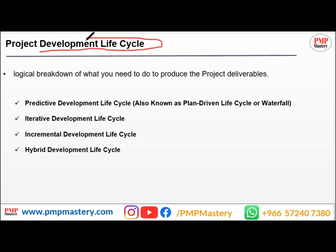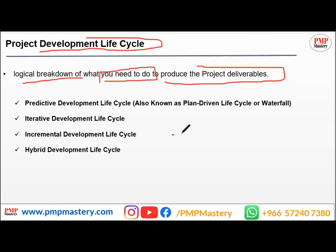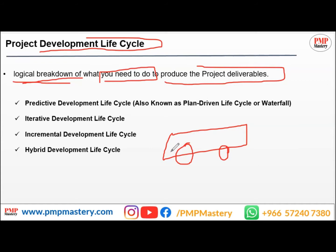The project development life cycle is a logical breakdown of what you need to do to produce the project deliverables. For example, if you are developing a car, you are breaking down what you need to do — planning, designing, developing, testing. That is what the project development life cycle covers.